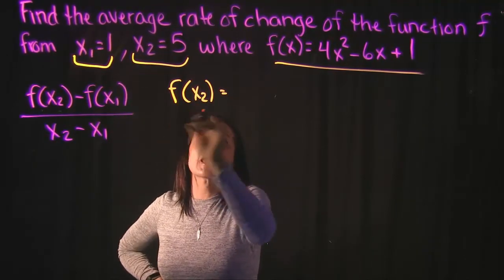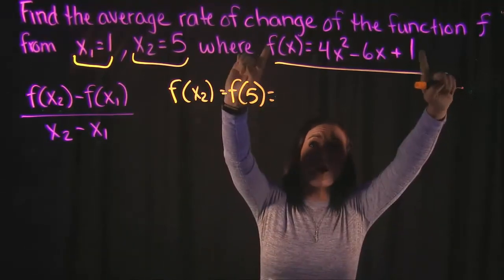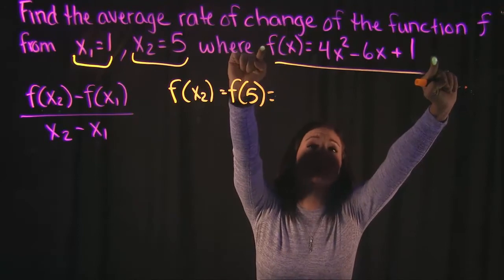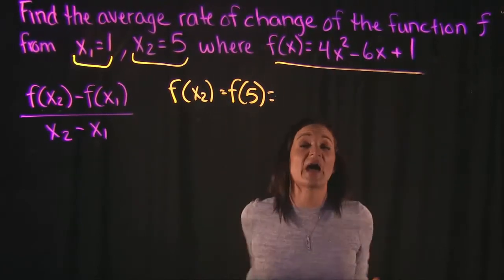So if we're going to find f(x2), that means we're finding f(5). So we're taking our function f(x) here and we're going to replace every single one of these x's with a 5 and simplify.